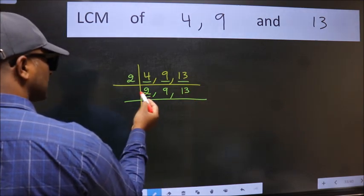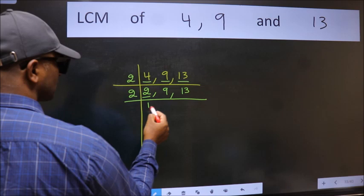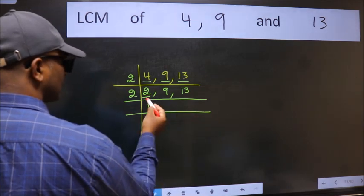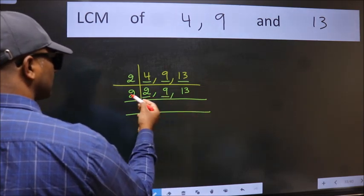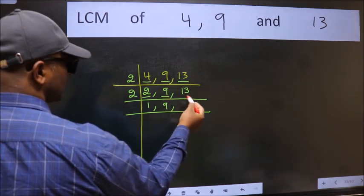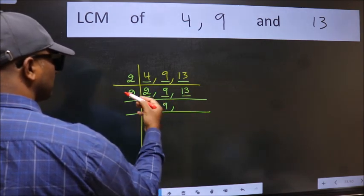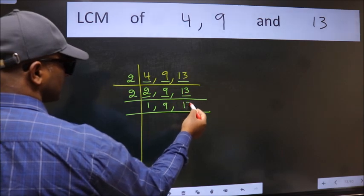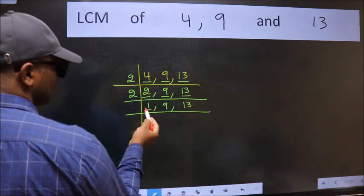Now here we have 2. 2 is a prime number, so 2 once is 2. The other number 9, not divisible by 2, so we write it down as it is. The other number 13, not divisible by 2, so we write it down as it is. Now we got 1 here.